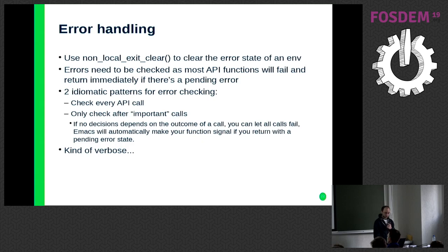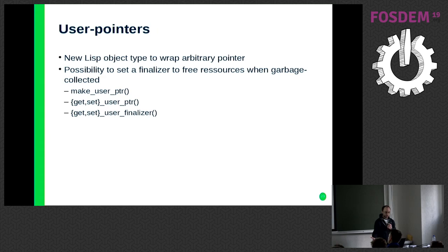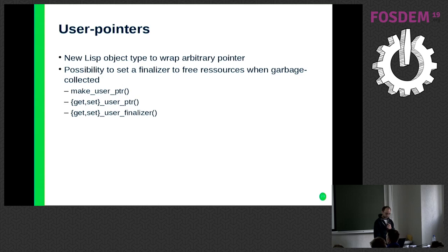I also had to add a new Emacs Lisp object type. You can wrap any kind of pointer — if you use a library that provides a handle when you open a resource, you can store that handle inside a user pointer. There are functions to make it, to get and set it, and there's a finalizer so that when the object is garbage collected, you can set a function to be called at that point. So you don't have memory leaks.